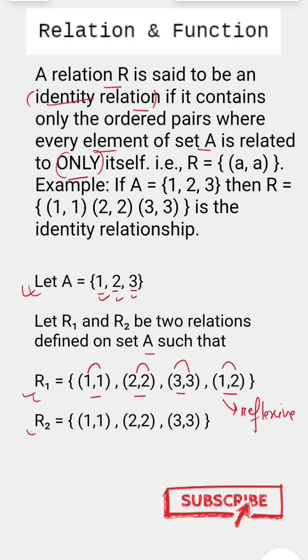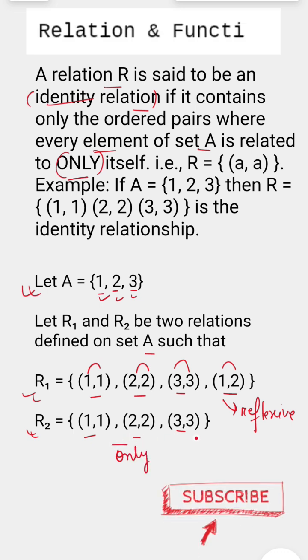In relation 2, we can see that we only have ordered pairs with similar elements. The word 'only' reflects that you cannot have any other ordered pairs, which you can see in case of relation 1.